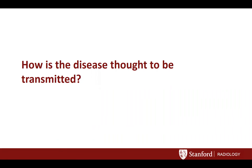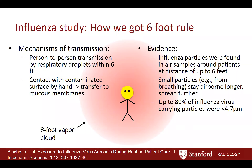How do we think the disease is transmitted? We don't have direct evidence specific to COVID since it's so new, but we can extrapolate from influenza data. The main mechanism is person-to-person transmission by respiratory droplets within six feet — that's why we have the six-foot social distancing rule. Transmission also occurs by contact with contaminated surfaces, usually via the hand touching mucous membranes. Up to 89% of flu-carrying particles were in small particles less than 4.7 microns in diameter, which can stay airborne longer.